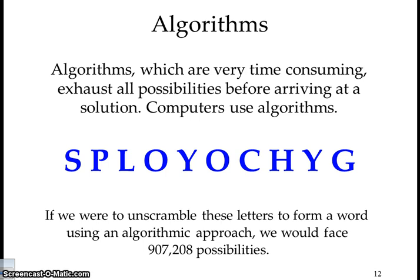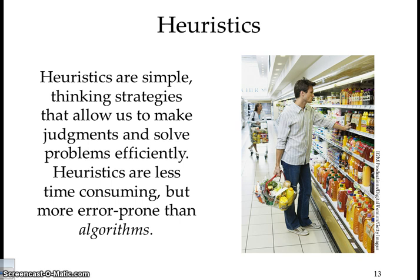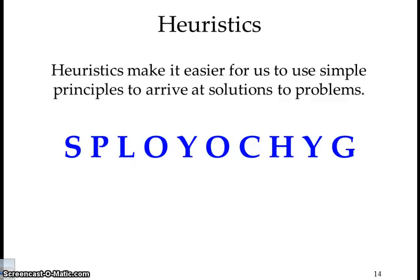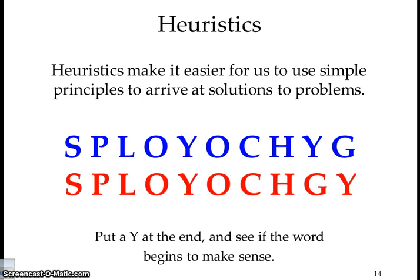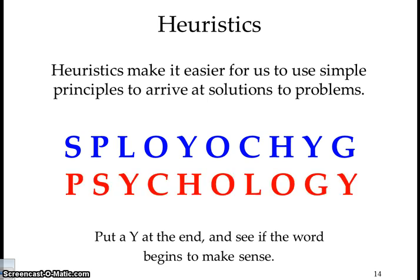Here's a scrambled word — can you figure out what the word is? Heuristics are simple thinking strategies that allow us to make judgments and solve problems efficiently. Heuristics are less time-consuming but more error-prone than algorithms. For example, if we put a Y at the end of the scrambled letters and see if the word makes sense, we can keep working through it. The word, obviously, is 'psychology.'